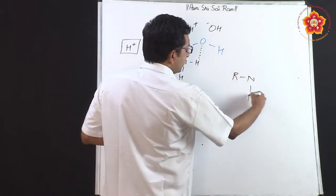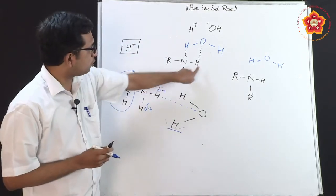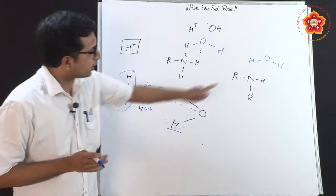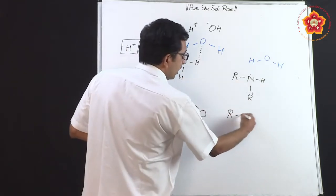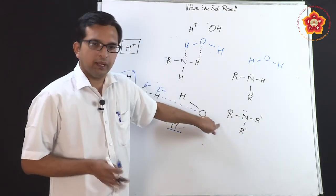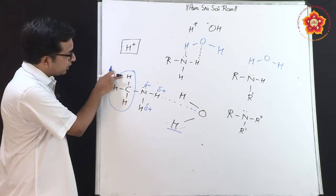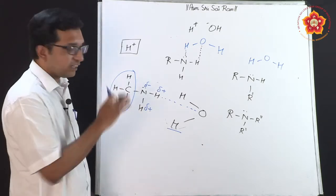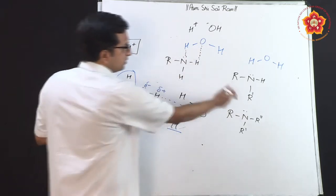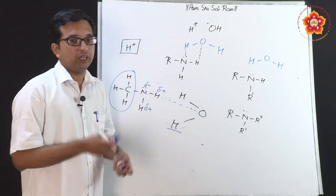In a secondary amine (R-NH-R'), there is just one acidic hydrogen available, compared to two in a primary amine. In a tertiary amine (R-N-R'-R''), there are no acidic hydrogens on nitrogen. Any hydrogens on the R groups are not acidic because they are on atoms with similar electronegativity. Therefore, with similar molecular mass, primary amines are most soluble in water, then secondary, then tertiary which may not be soluble at all.